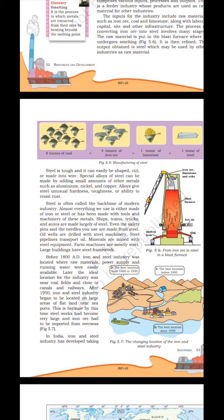In the blast furnace, iron ore, limestone and coke are fed in, producing hot air, molten iron and slag.